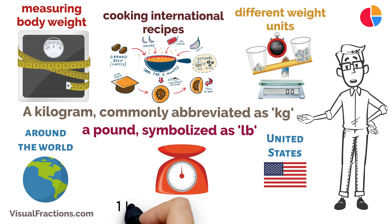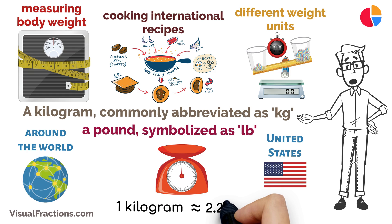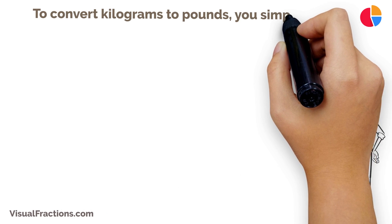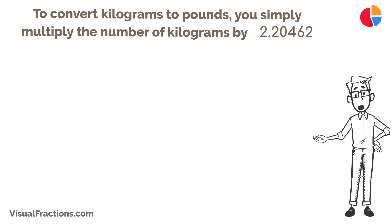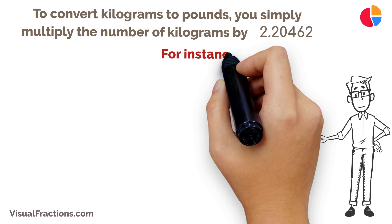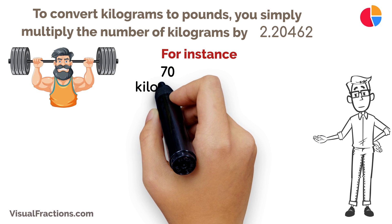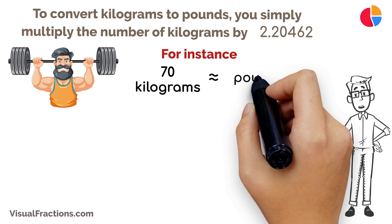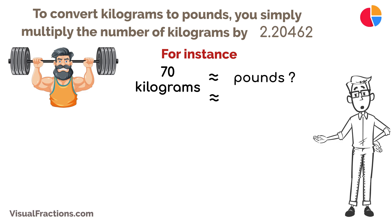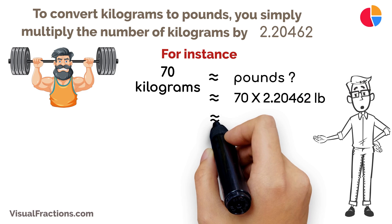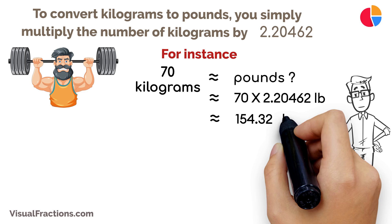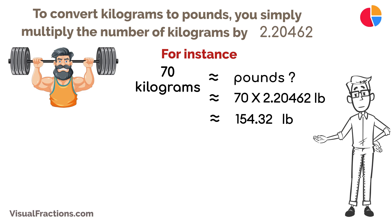Now, the crucial part: one kilogram is equal to approximately 2.20462 pounds. To convert kilograms to pounds, you simply multiply the number of kilograms by 2.20462. For instance, if you're trying to find out what 70 kilograms is in pounds, just multiply 70 by 2.20462, which gives you a total of approximately 154.32 pounds.